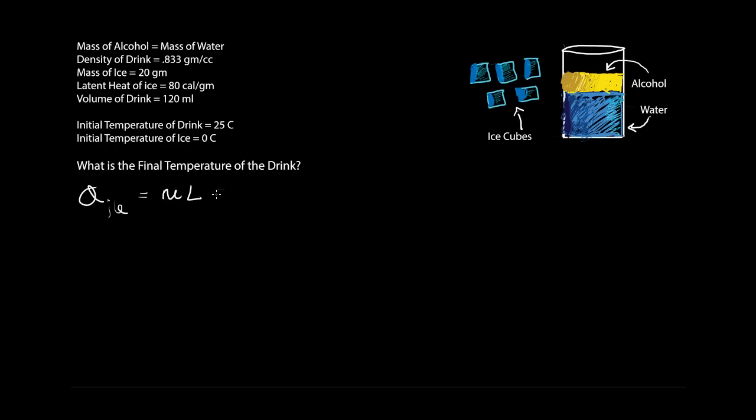This will be equal to the mass of ice, which is 20 grams, times the latent heat of ice, which is 80 calories per gram. So if we simplify this a bit, we lose our grams, we get 1600 calories. So that is the heat required for the ice to melt.